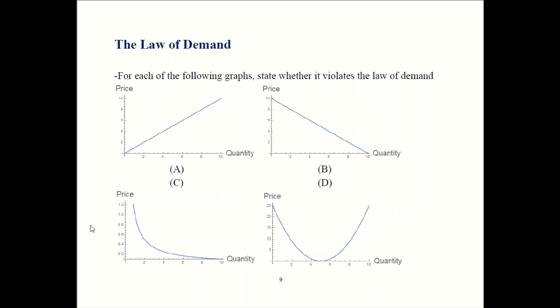Graph C, whenever price goes up, quantity demanded is going to fall. That sounds right. So graph C is nonlinear, but that's okay. The law of demand just says when price goes up, quantity demanded goes down. The law of demand does not imply that the relationship has to be linear. So curves are okay.